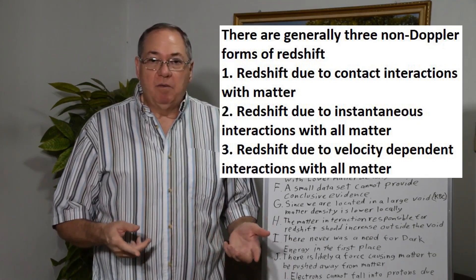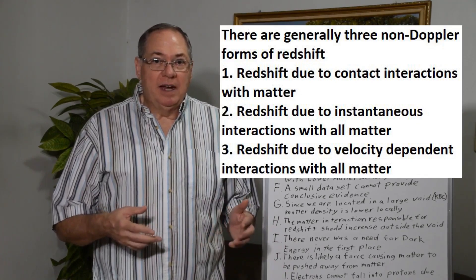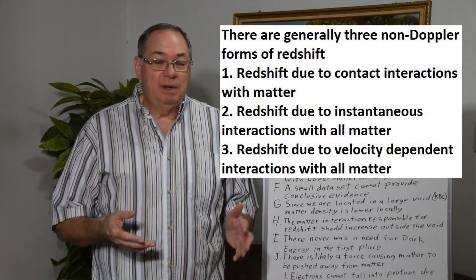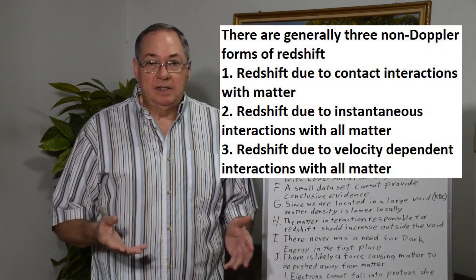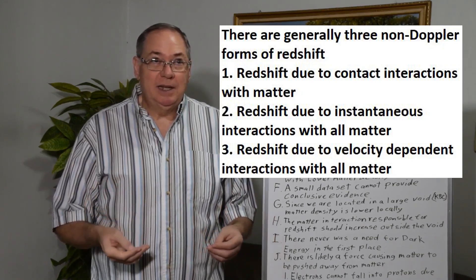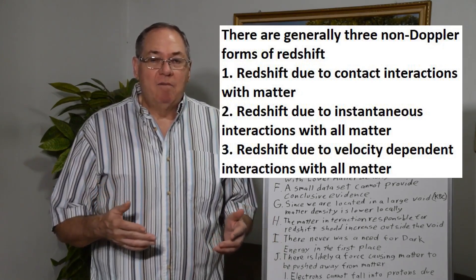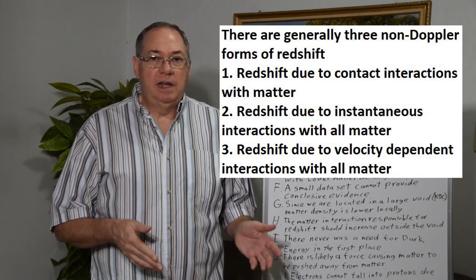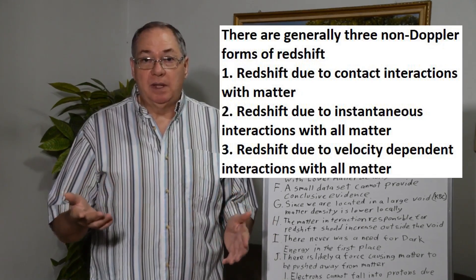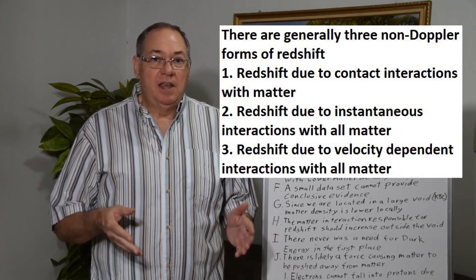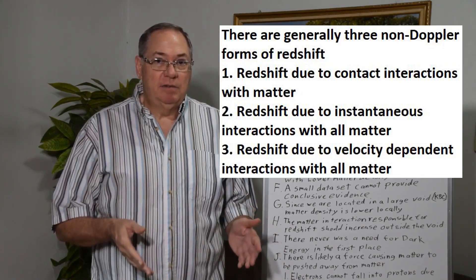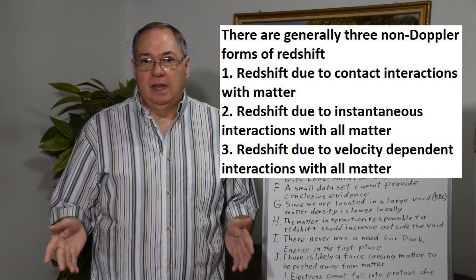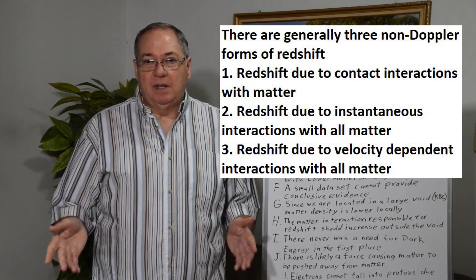And then a third thing would be you have interaction that's not instantaneous but still global with all matter. It's limited by some velocity, say the speed of light, which means that the longer the photon is traveling the more matter it interacts with, in which case you would see an increase in redshift for more distant photons.